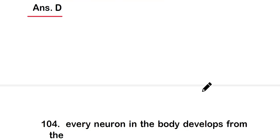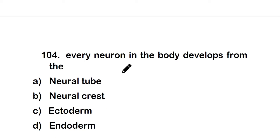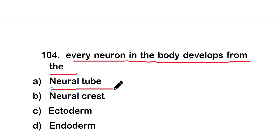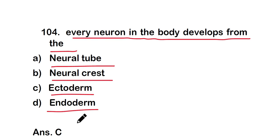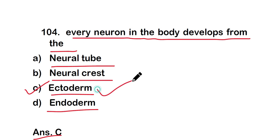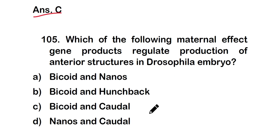Question 104: Every neuron in the body develops from the ectoderm. So every neuron develops from the ectoderm.